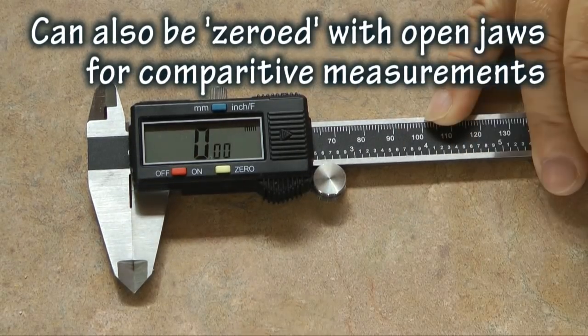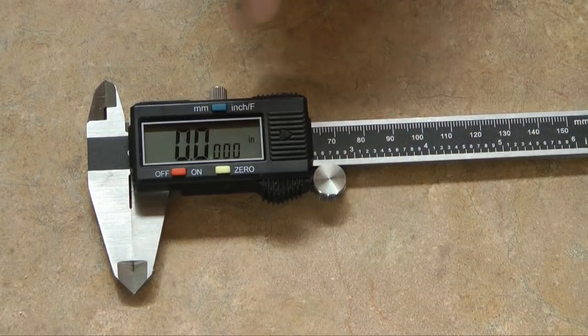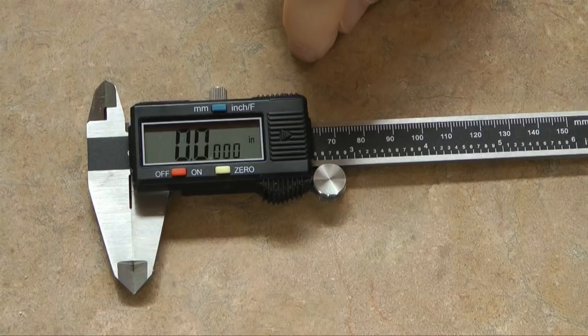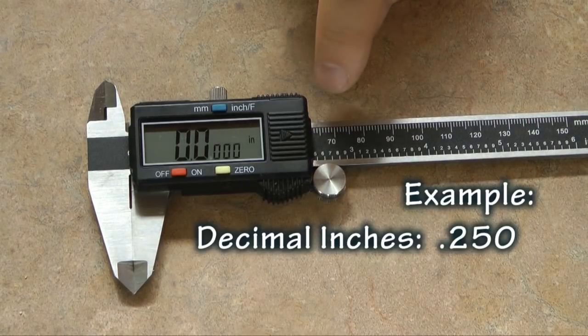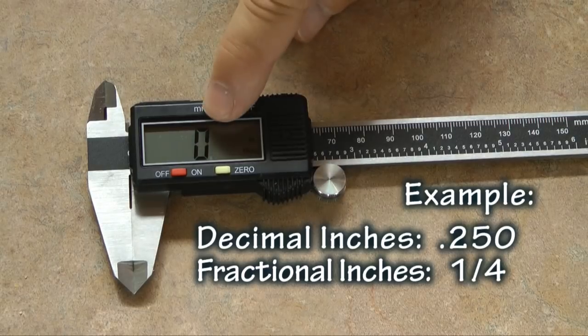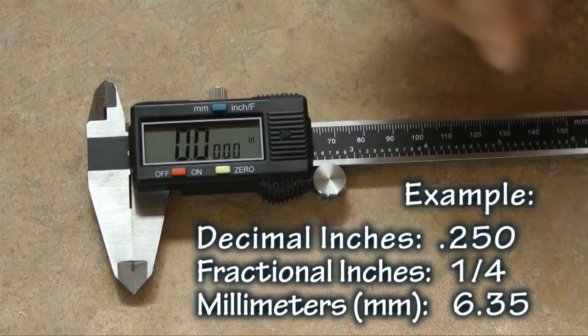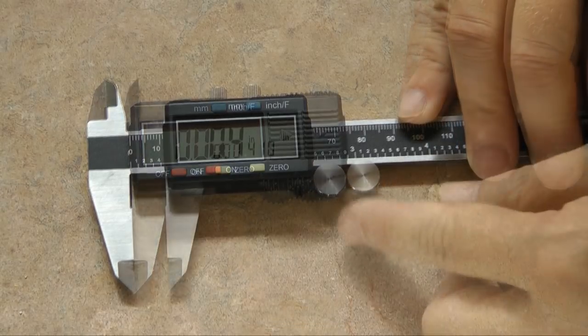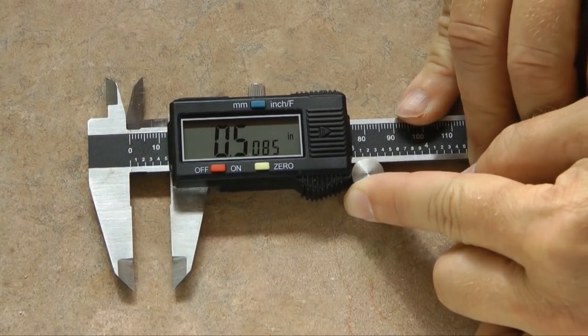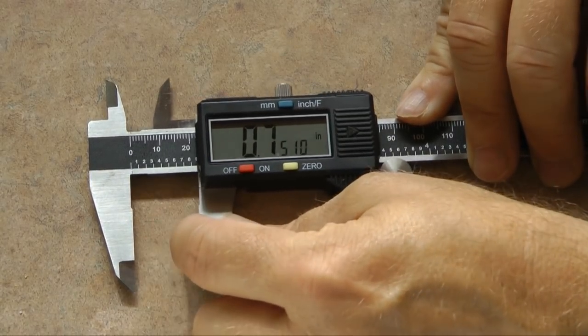And then the last important button is the unit of measurement that we choose to use. For example, we can have decimal inches, fractional inches, and we can also have millimeters. We have a thumb wheel which facilitates moving it carefully and slowly. Of course, you can just move it manually like that.